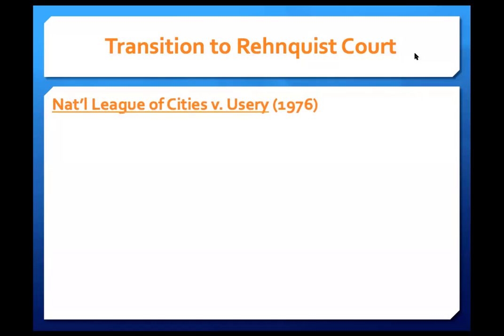When we last talked about the 10th Amendment, back in our pre-spring break lives, we looked at what I call the transition to the Rehnquist Court era. This is when we read the case of National League of Cities versus Usury, where the court tells us the 10th Amendment does reserve a zone of activities purely for the states — certain types of state activities that were traditional or integral to state powers, and those are protected from federal intrusion.